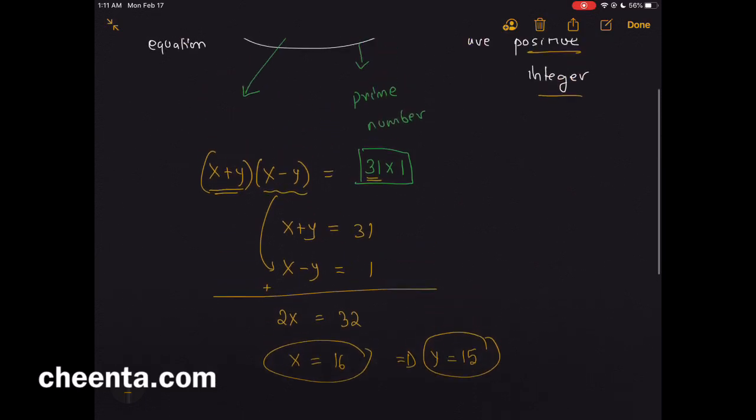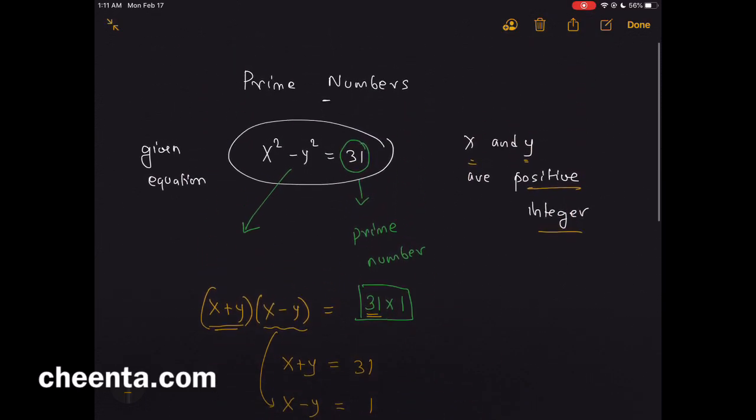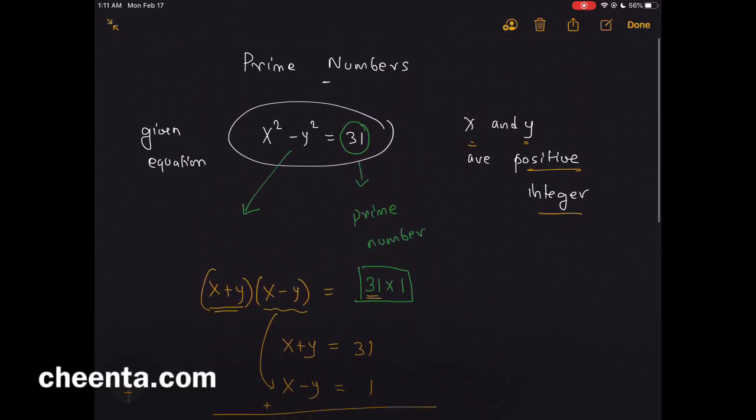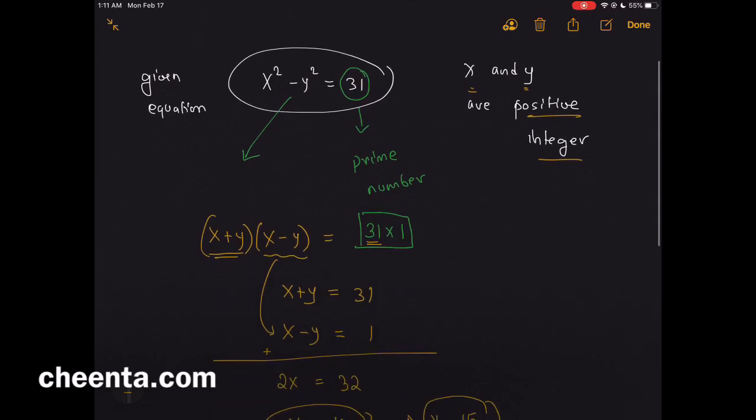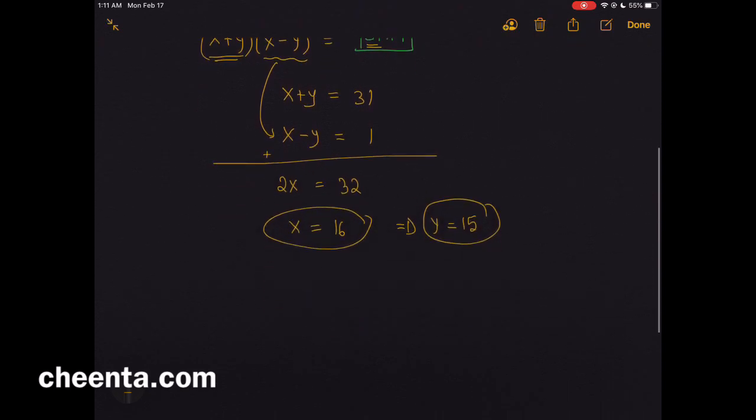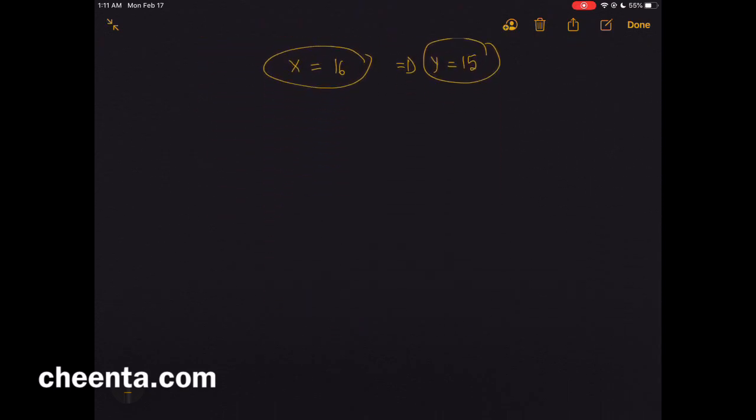It uses a very simple idea from the notion of prime numbers and divisibility, but it also has a beautiful pictorial connotation. So if you draw the picture of this particular equation, you see (x + y)(x - y) = 31.